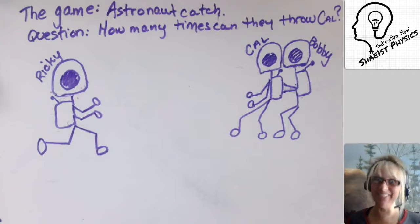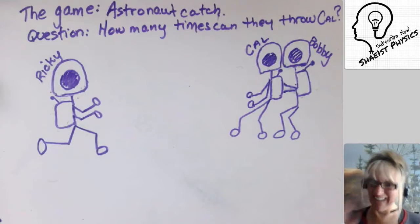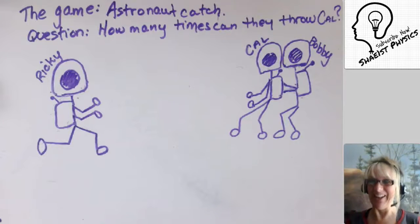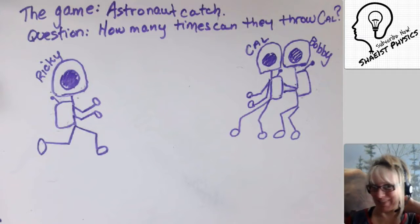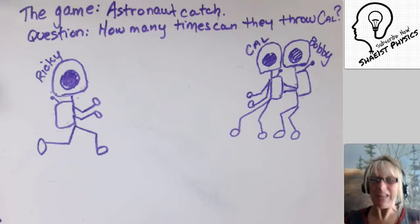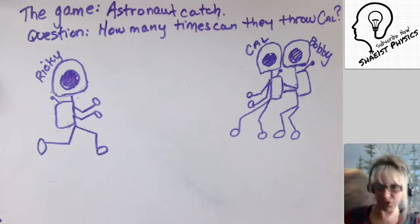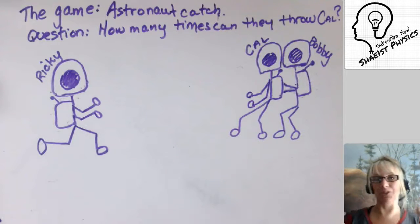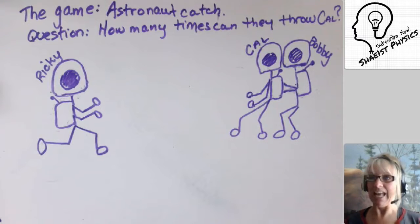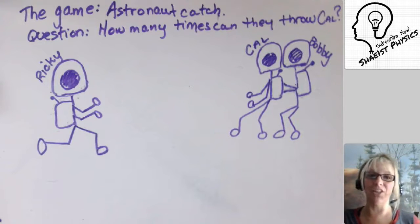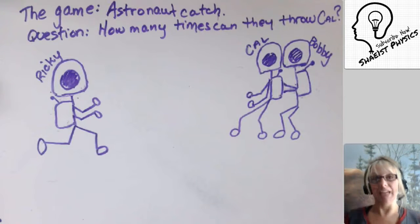I'm learning a little bit how to draw — not really, but we're getting there. I better be specific here because I know you're not going to be able to tell what this is if I don't say. Here's the game: Astronaut Catch. We have three astronauts and they're out in space, just floating around. They have absolutely no gravity affecting them in any way, shape, or form, and they are going to play a game of catch.